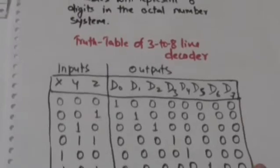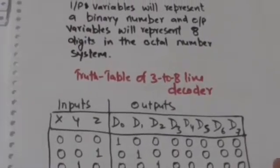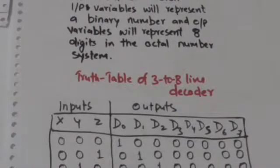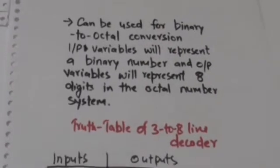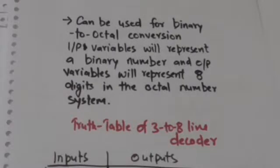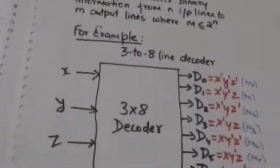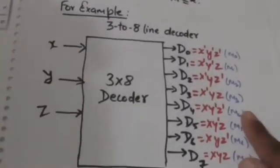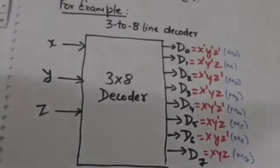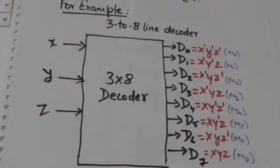This 3-to-8 line decoder can be used for binary to octal conversion. The input variables will represent a binary number and the output variables will represent the 8 digits in the octal number system.